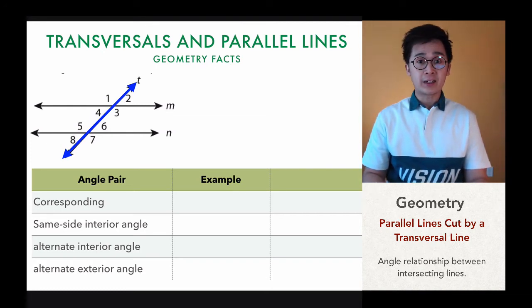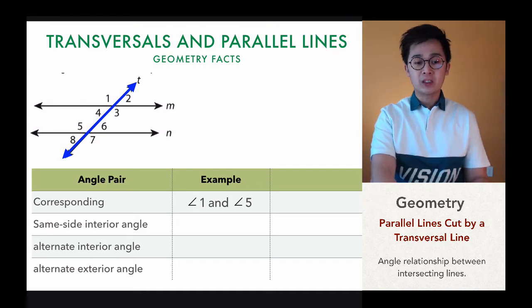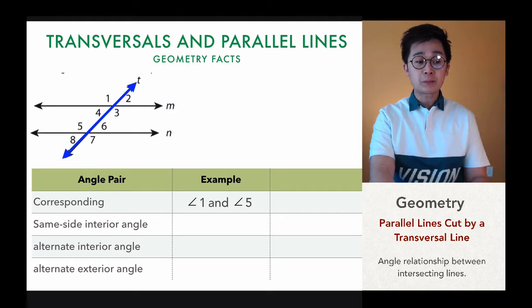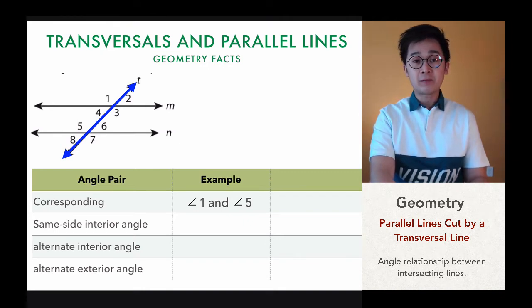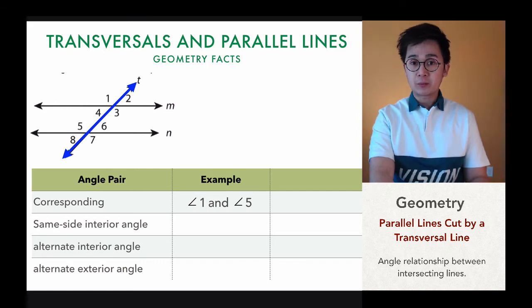Let's start with corresponding angles. Corresponding angles in geometry would be angle one and angle five — notice they are both on your parallel lines but on the same side of your transversal. Angle one and angle five is not the only corresponding angle pair: angle four and angle eight are also corresponding angles, and angle two and angle six, same with angle three and angle seven. So angle one and angle five is just one of four corresponding angle pairs in this diagram.